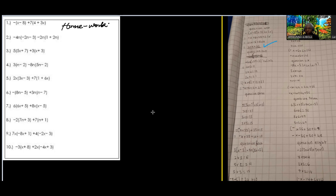The first question is correct. Negative times negative is positive, and negative times positive is negative. 7 times 4 is 28 and 7 times 3 is 21, that's also correct. And you are able to say minus x plus 21x gives you 20x, and 8 plus 28 is 36.